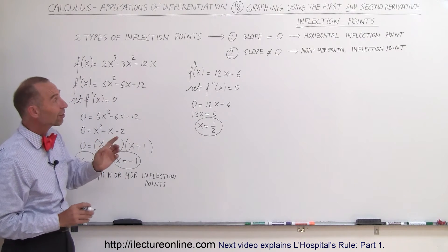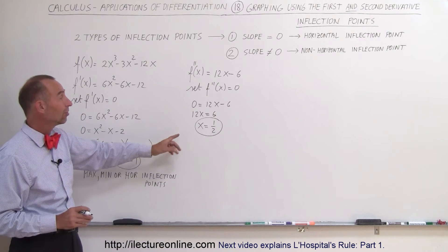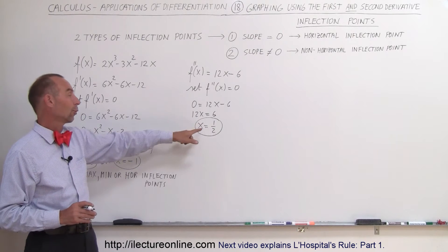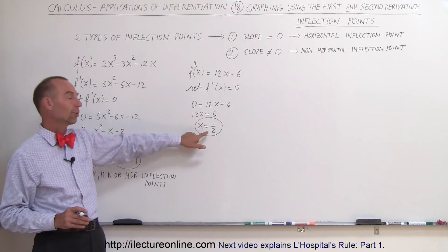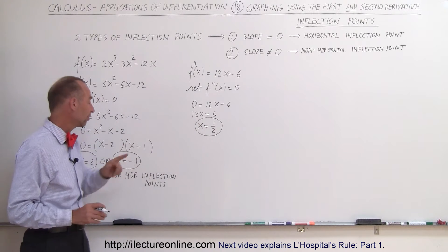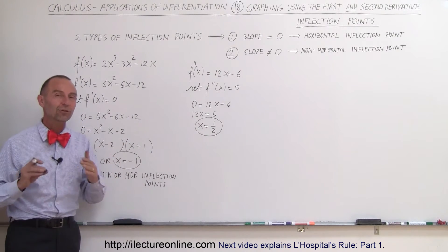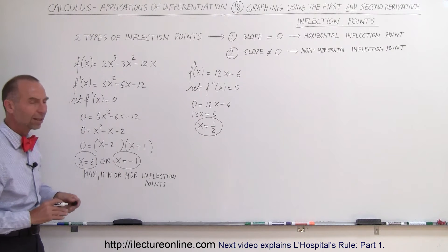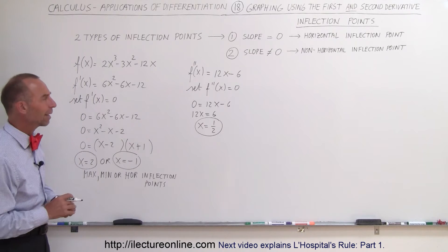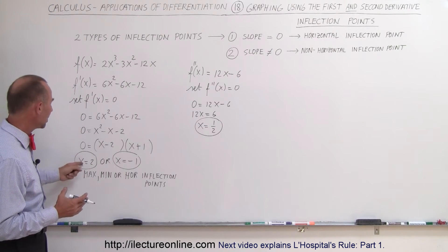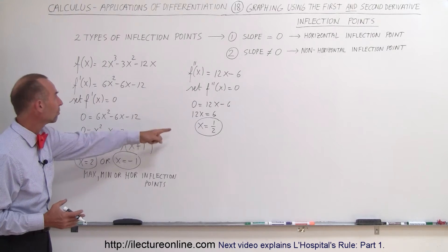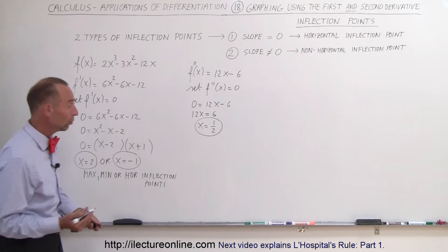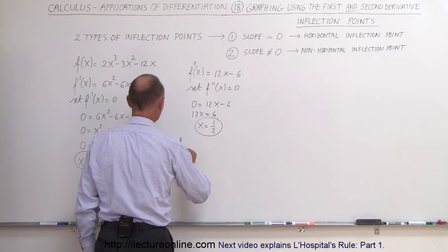This is a non-horizontal inflection point, because if it was a horizontal inflection point, we would have found this value when we set the first derivative equal to zero. Now, before we can graph that, we need to find the corresponding y-values of those three critical points.